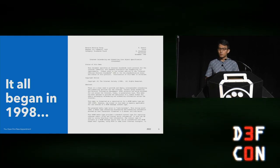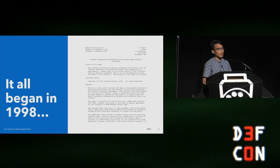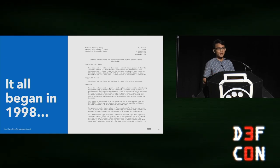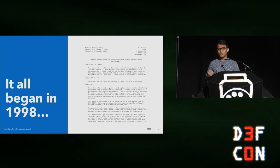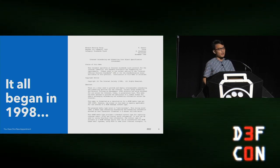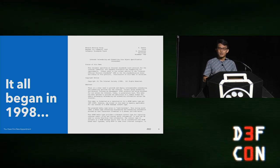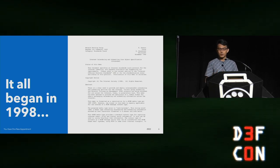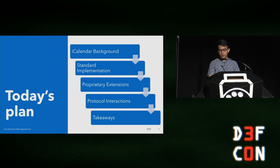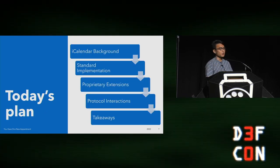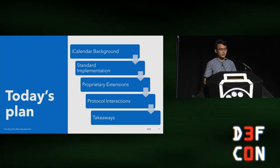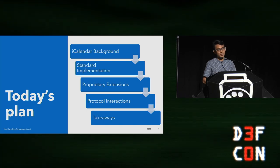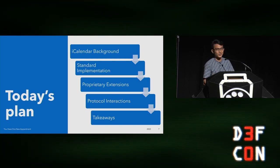Back in 1998, the context was a huge office wars — all these companies were creating their own specifications, their own ways of doing things, and they weren't compatible with each other. That's terrible for the end user, because if you're sending an invite it shouldn't matter what client the other person is using — you want them to be able to accept and attend. So these companies came together, built a format, and decided to use it as a standard operating format between them.